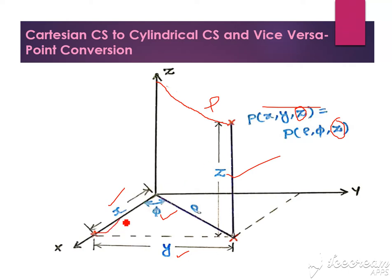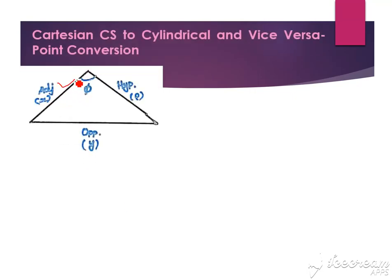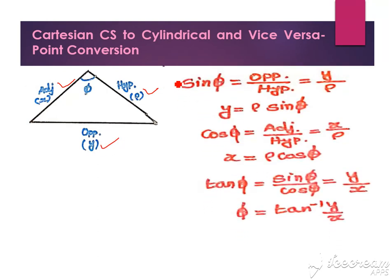While considering this right angle triangle, this angle is 90 degrees. Simply I redraw the diagram - this is x, this is rho, and this is y. From that we can find sin phi. Sin is opposite divided by hypotenuse, so opposite is y divided by rho. From this we can find the value of y.